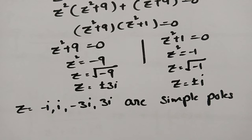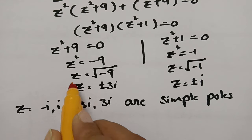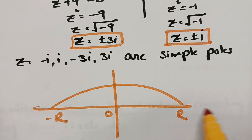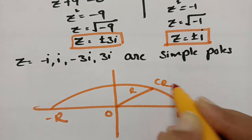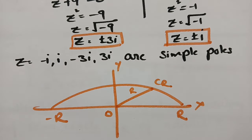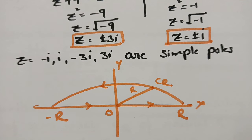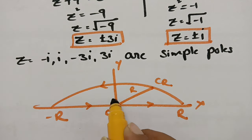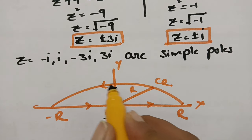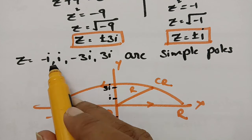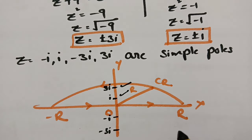We have to check whether these poles are inside, outside, or on the given contour. The contour is a semicircle with center 0 and radius r, in the upper half-plane. The poles +i and +3i lie inside the contour, while -i and -3i lie outside. We need to find residues only for the interior poles.